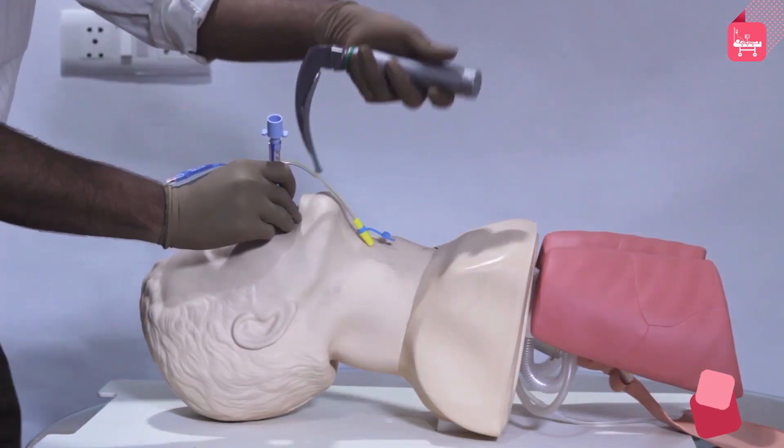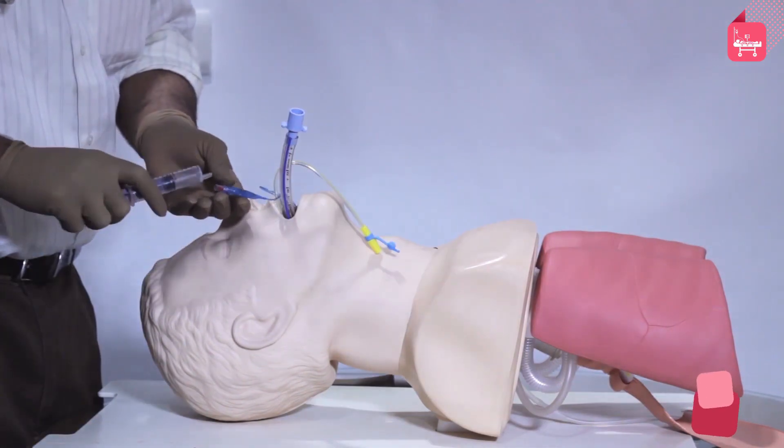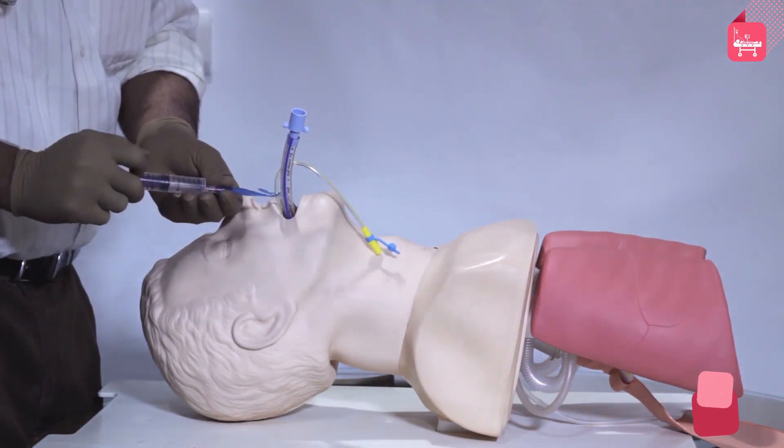The laryngoscope is gently withdrawn, taking care not to injure the lips and teeth. Inflate the cuff with 5 to 10 milliliters of air using a syringe.